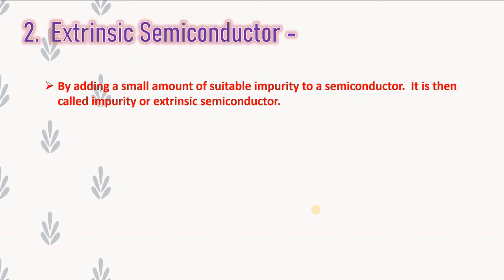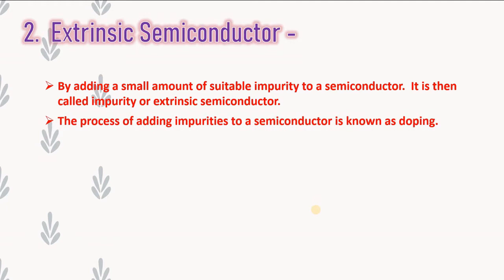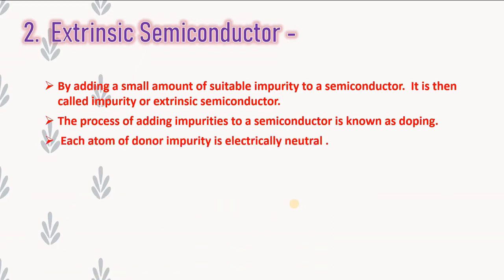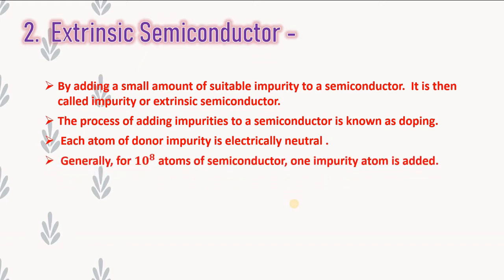The process of adding an impurity to a semiconductor is known as doping. When we add an impurity to a semiconductor, the process is called doping. Each atom of donor impurity is electrically neutral. When we add impurity to a semiconductor, this impurity is electrically neutral and carries no current. Generally, for 10 to the power of 8 atoms of semiconductor, one impurity atom is added.